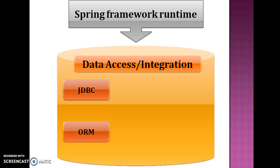The next module in this category is ORM. The ORM module provides an integration layer for popular object-relational mapping APIs like JPA, JDO, and Hibernate. Using the Spring ORM module you can use all of these object-relational mapping frameworks in combination with all the other features Spring offers.